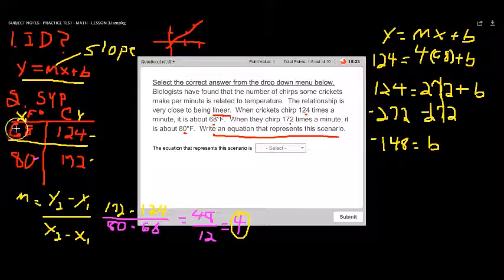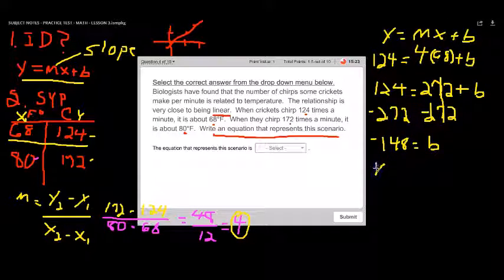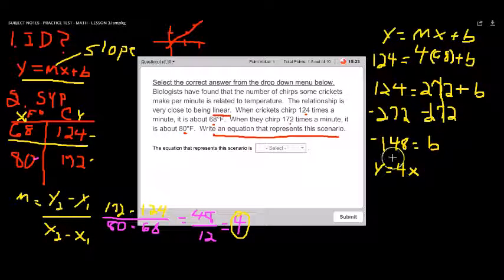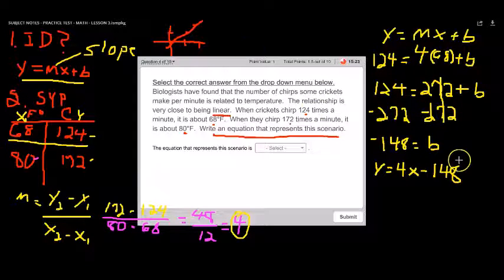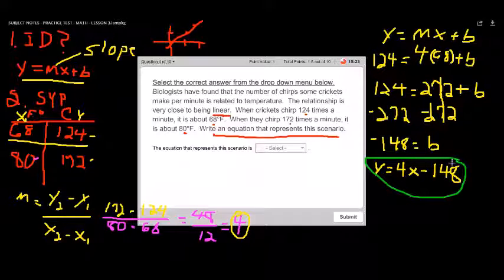So now we have an X point. We have a Y point. We have the M and we have the B. So now we can establish our equation. So now we can just simply say Y because Y can be a variety of outputs equals the slope, which is always the same, M times X, which could be a variety of outputs. And then this is a minus 48. So we're going to say instead of plus, we can say plus or minus 48. Or else we can just say minus 148, plugging in that B value. And that would be your answer for that question statement.